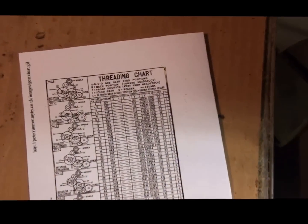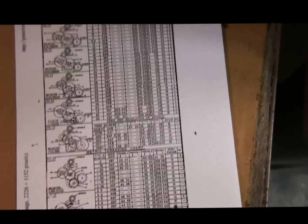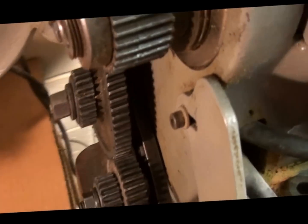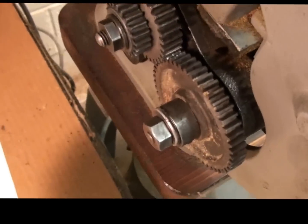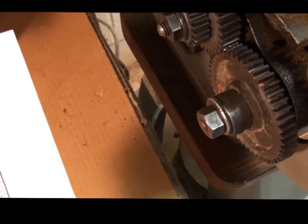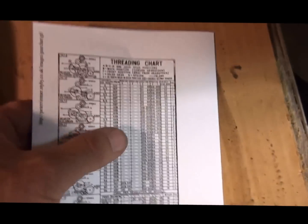I finally found this chart. This appears to be the right chart for this lathe, and I looked through it, and I think I got everything all set up right. Basically, we're looking at 12 threads per inch, so you look through the chart here, and it tells